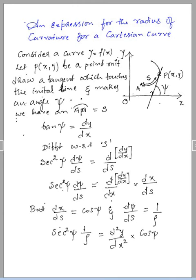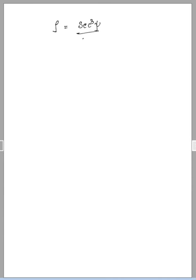Now, rearranging this and finding out rho, I can rewrite rho as — just cross-multiplying the terms — rho equal to, and as we know that 1 over cos is nothing but secant, we can rewrite that as sec cubed psi — that is sec squared into sec, giving sec cubed psi — all divided by d squared y by dx squared.